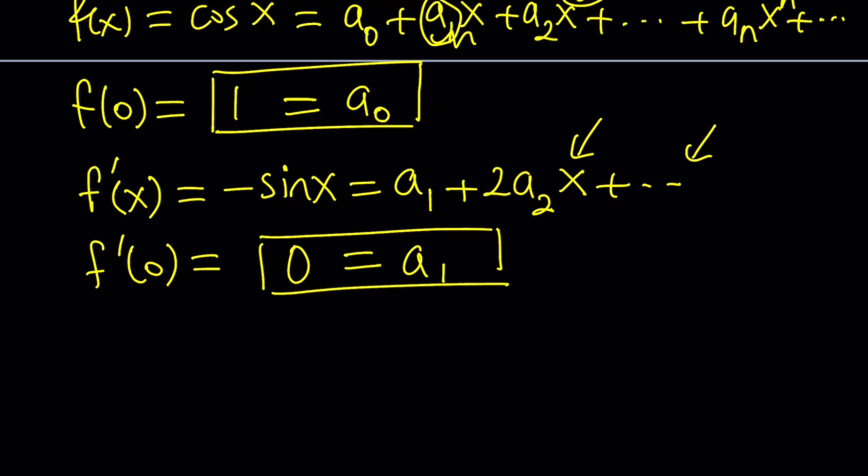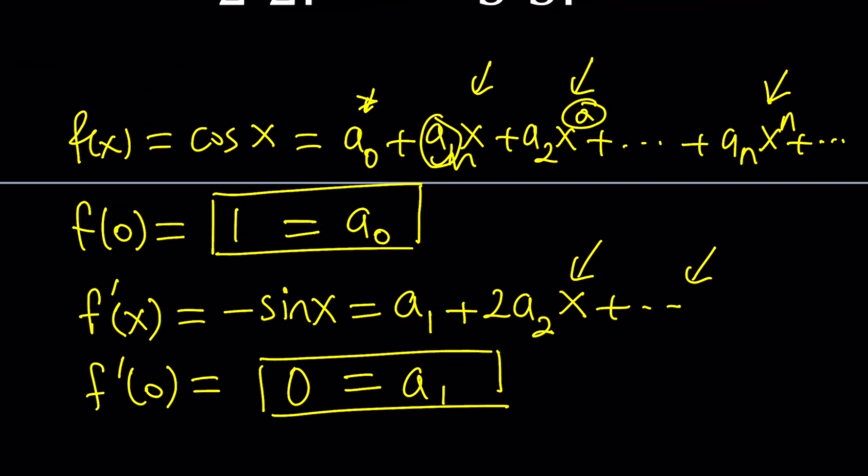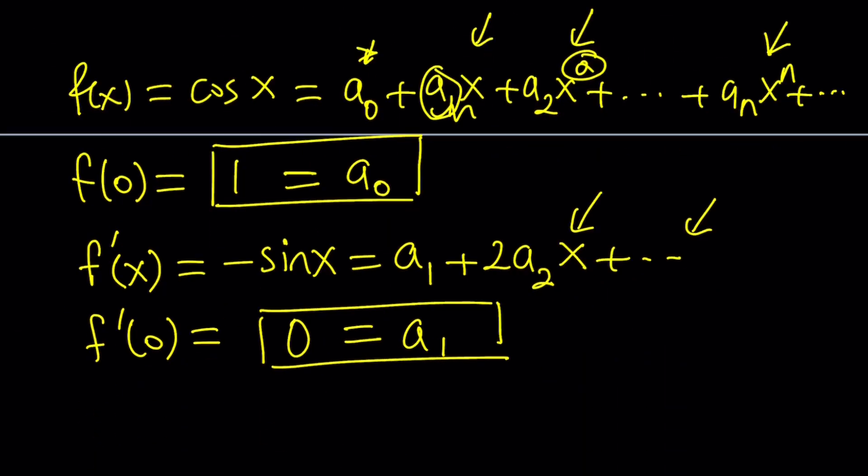No. Actually, every other coefficient from now on is going to be 0, because if you think about it, the derivative of cosine is negative sine. The derivative of negative sine is negative cosine. The derivative of negative cosine is sine. You get the idea? It's a cycle. So, if they ask you the 125th derivative of sine x, you can find it.